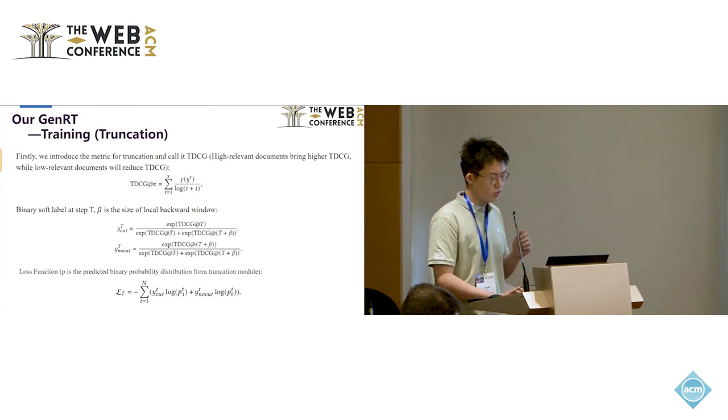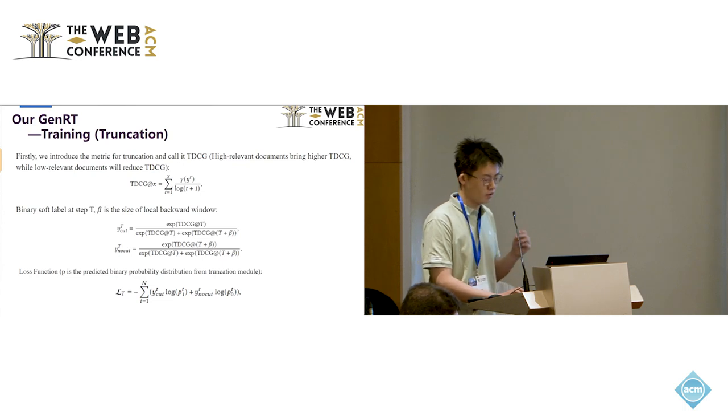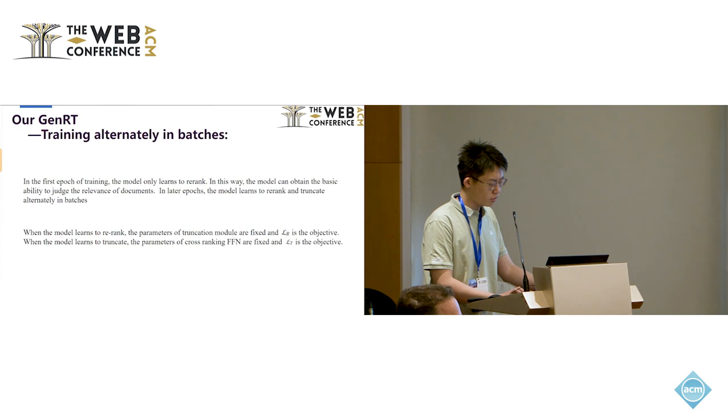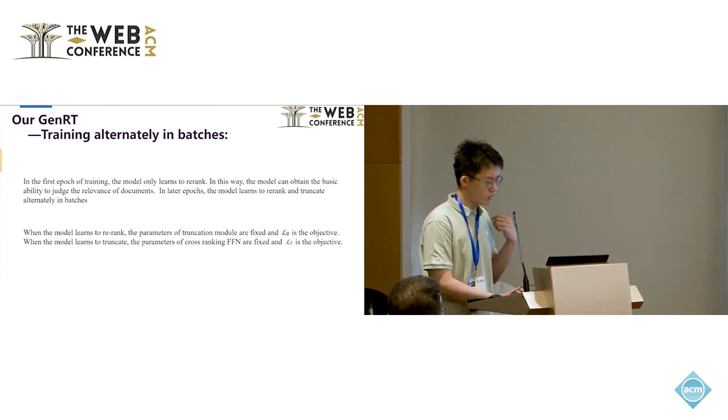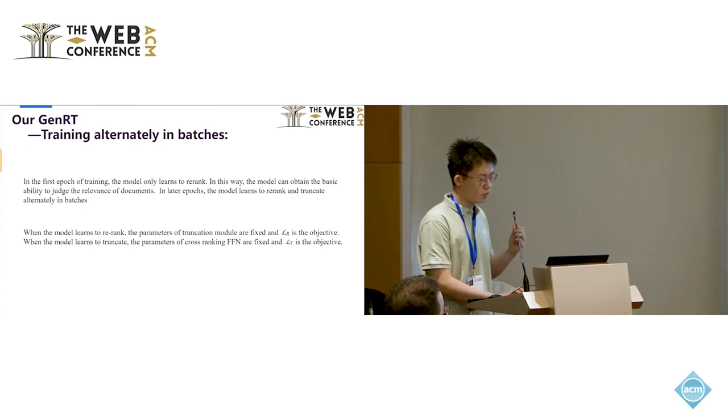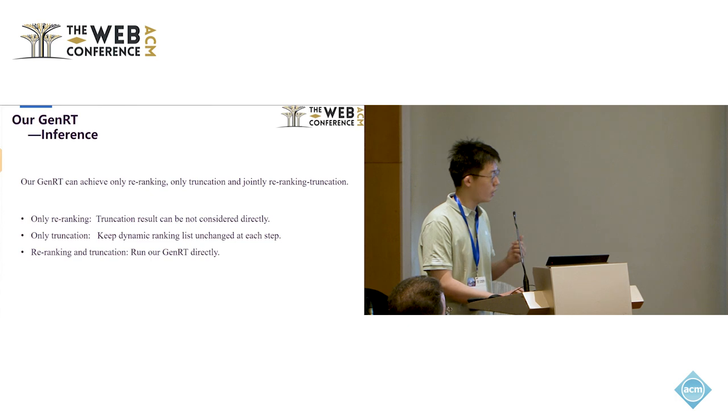As for the training of truncation, firstly, we introduce a metric for truncation and call it TDCG. High-relevant documents bring higher TDCG, while low-relevant documents will reduce TDCG. The TDCG is a trade-off between the documents in the final ranked list. We use TDCG to compute the reward for truncation or not at each step and use it as a binary soft label. We compute the cross-entropy between the label and the predicted distribution as a loss function for truncation. In the first epoch of training, the model only learns to rerank. In this way, the model can obtain the basic ability to capture the relevance of documents. In later epochs, the model learns to rerank and truncate alternatively in batches.